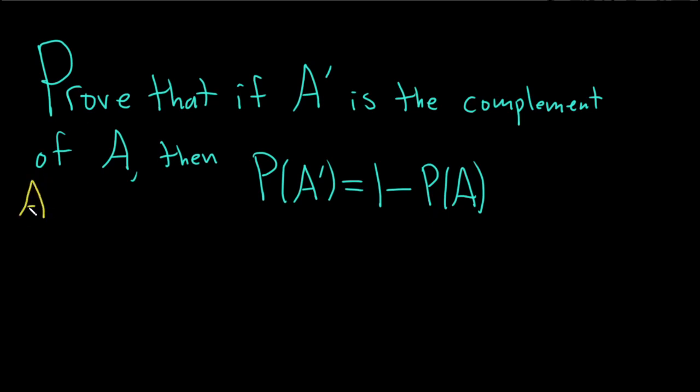So let me just briefly go over those. We have axiom 1, which basically says that the probability of any event is greater than or equal to 0, and this is for all events A. Then we have axiom 2, which says that the probability of the sample space is 1.